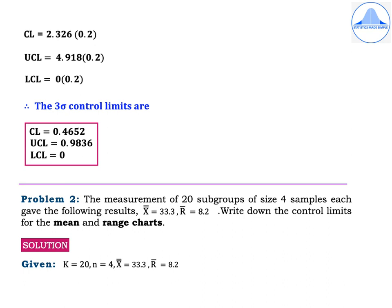Problem 2: Measurements of 20 subgroups of size 4 samples each gave the following results: x-double-bar = 33.3 and R-bar = 8.2. Write down the control limits for the mean and range charts. Given: k = 20 (number of subgroups), n = 4, x-double-bar = 33.3, R-bar = 8.2.